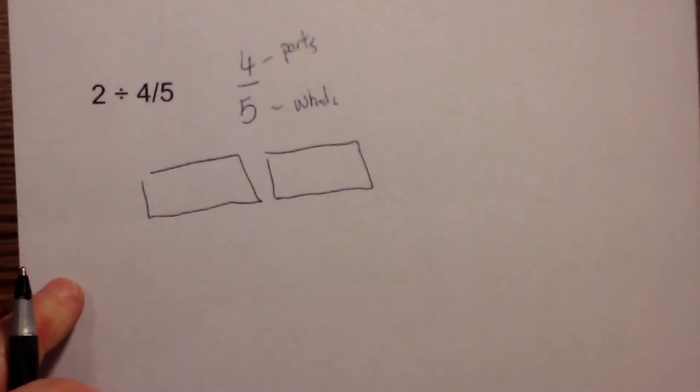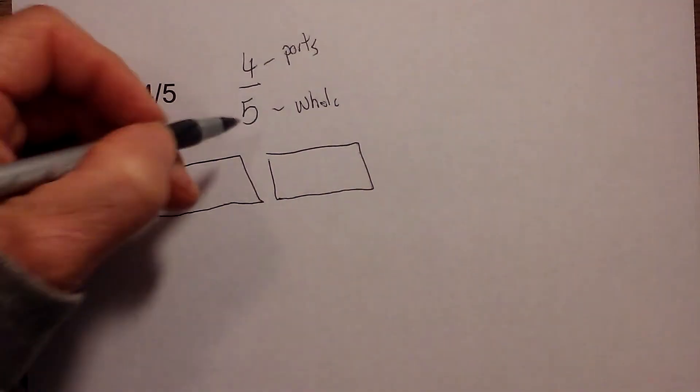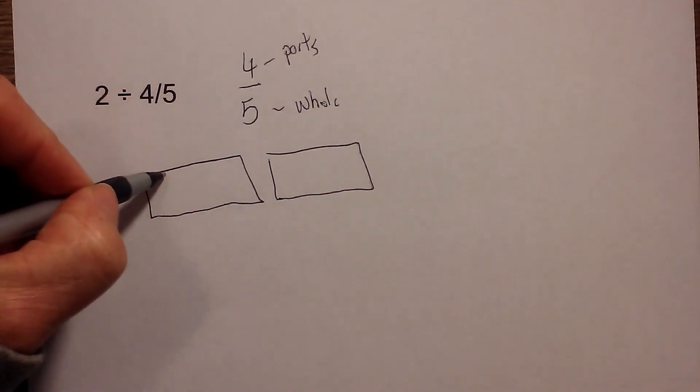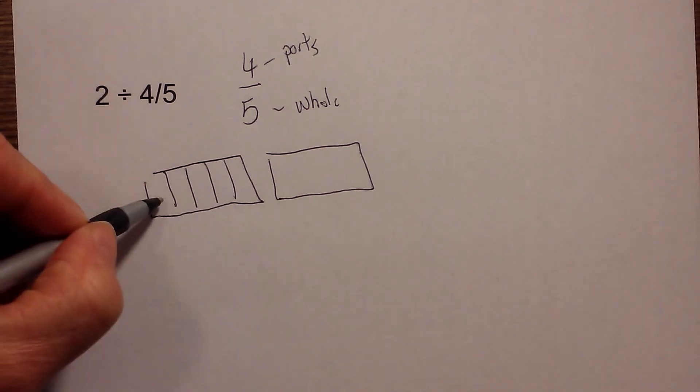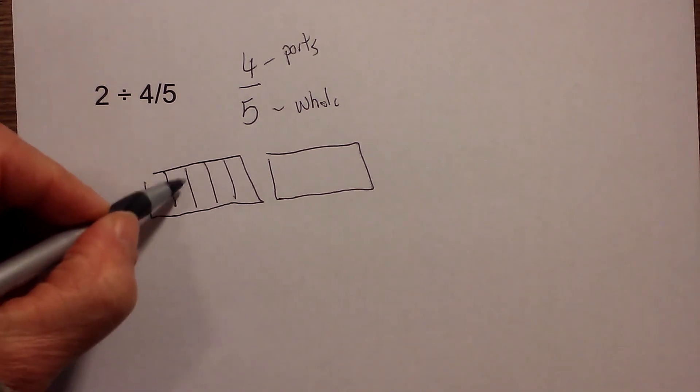I need to divide each block into 5 parts. So I mark 1, 2, 3, 4, 5 for each block — dividing all 2 blocks into fifths.